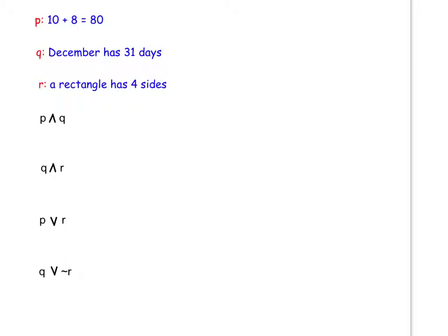For the first statement P: 10 plus 8 equals 80. That is a false statement. The statement Q: December has 31 days. That is a true statement. A rectangle has 4 sides. That is a true statement.